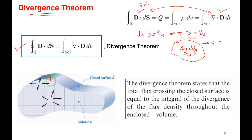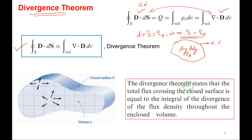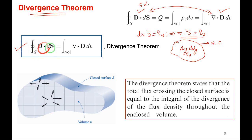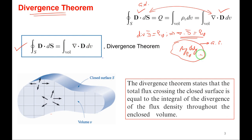The divergence theorem states: the total flux crossing the closed surface — LHS — is equal to the integral of the divergence of the flux density throughout the enclosed volume — RHS. If I consider any closed surface, it also defines an enclosed volume — one and the same closed surface.